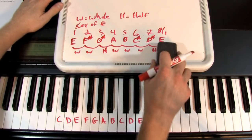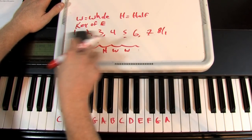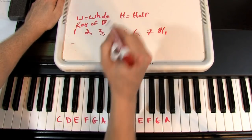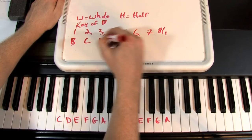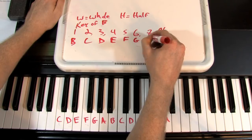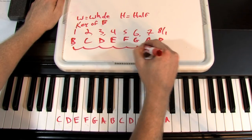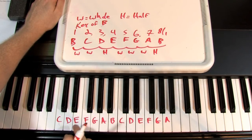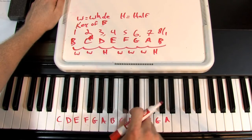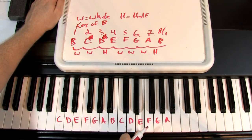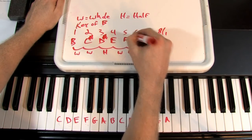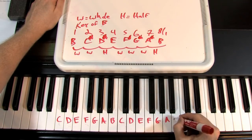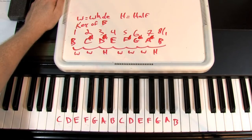Let's do a harder one — the key of B. Writing out letter names: B, C, D, E, F, G, A, B. Applying whole, whole, half, whole, whole, whole, half: whole step from B is C sharp, whole step to D sharp, half step to E, whole step to F sharp, whole step to G sharp, whole step to A sharp, and half step back to B. There are five sharps in the key of B.